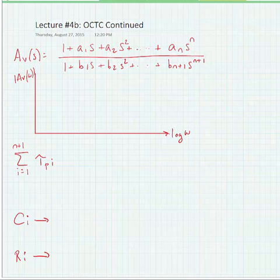We're going to assume that we have a general transfer function, AV of s, and it's got a number of zeros and a number of poles. The key here is that the number of poles in the equation is greater than the number of zeros.